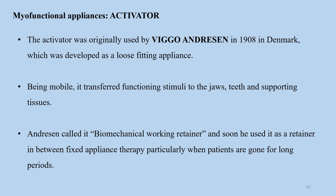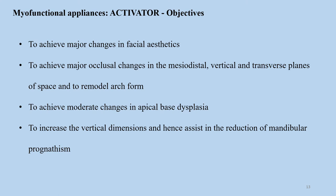The next appliance we will discuss is the activator. The activator was originally used by Viggo Andresen in 1908 in Denmark; however, it was developed by Kingsley in 1879 and was used as a loose-fitting appliance. As the appliance is mobile, it transferred functional stimuli to the jaws, teeth, and supporting tissues. Andresen called it a biomechanical working retainer, and it was soon used as a retainer in fixed appliance therapy.